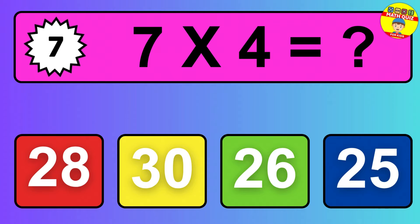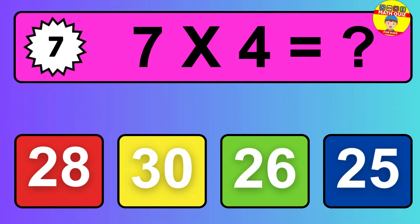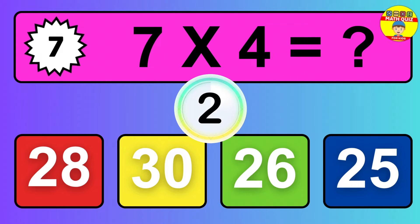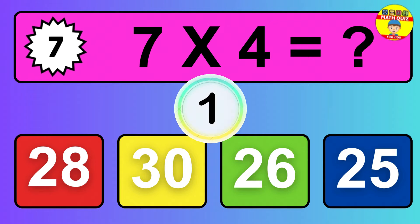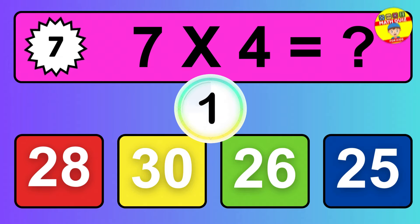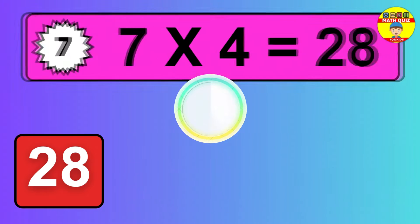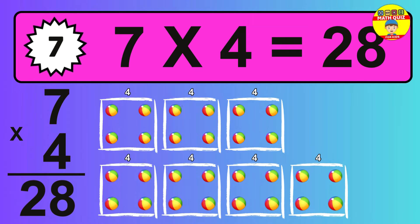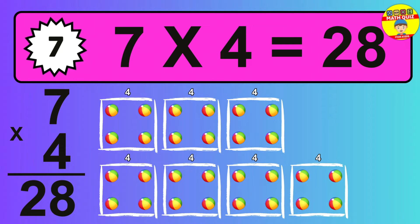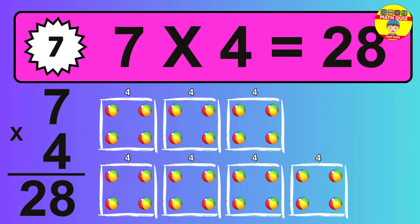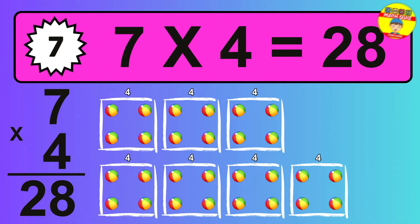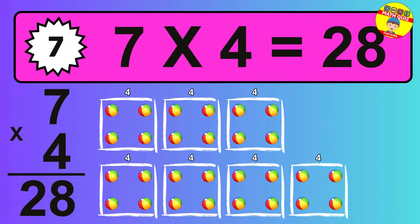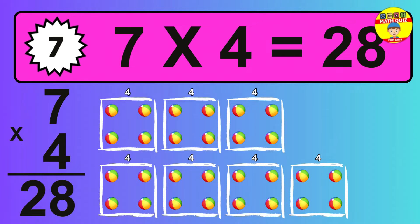Question 7. 7 times 4 equals what? The answer is 7 times 4 is 28. To calculate, we have 7 groups with 4 balls each one. So, how many balls do we have? 28 balls.